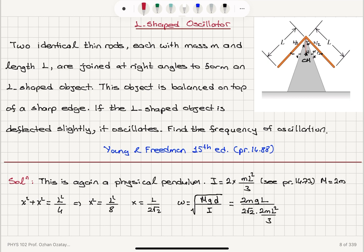So I see that 2ms will cancel, one of the Ls will disappear, and this is inside the square root. And this is going to become, because 3 will go upstairs, it will be 3G in the numerator. So it will be 3G divided by 2 square root 2 L, square root.